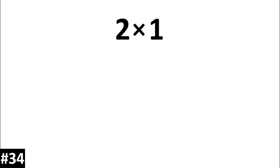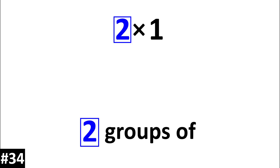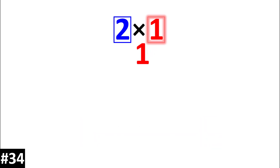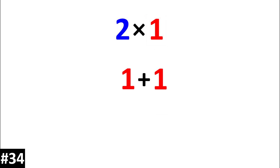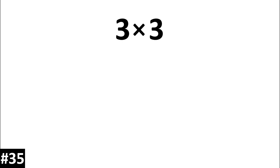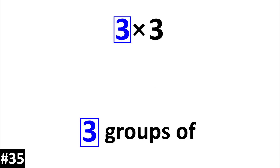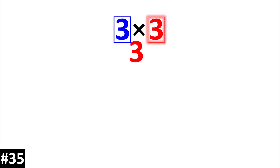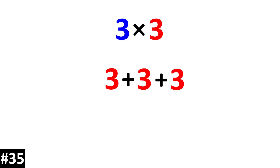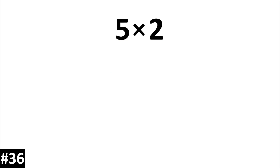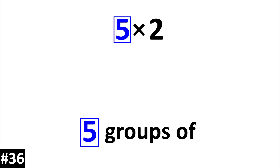Two times one is the same thing as two groups of one. Three times three is the same thing as three groups of three. Five times two is the same thing as five groups of two.